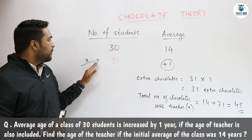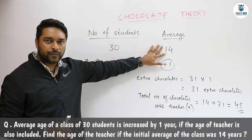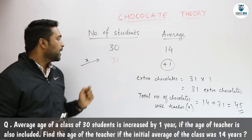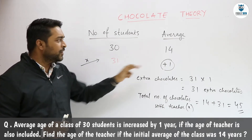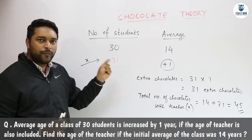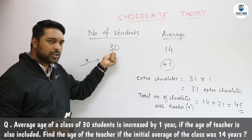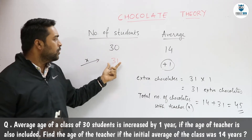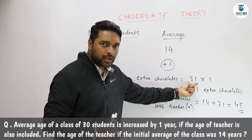When the teacher sees that each of the 30 students has 14 chocolates with them, the teacher will also keep 14 chocolates with herself. Now she must have some extra chocolates which will increase the average by 1. So she has to give 1 chocolate to each of the 31 persons, because earlier there were 30 students and now including the teacher there are 31 persons in the class.